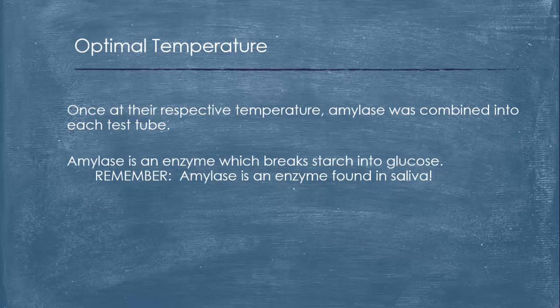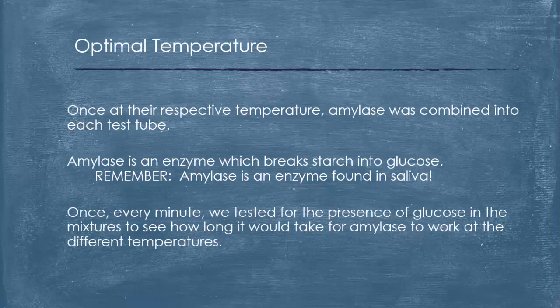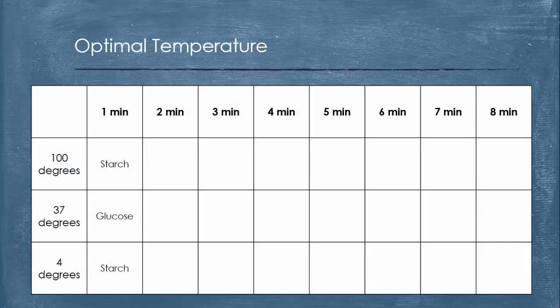After that, once every minute we tested for the presence of glucose in the mixtures to see how long it would take for amylase to work at the different temperatures. We had our little drop plates. At one minute, what we found, or what we should have found, was at 100 degrees it was starch, there was no glucose formed. At 37 degrees it worked almost immediately, glucose was broken down. And at four degrees it yet hadn't broken down, it was still starch. We did this consecutively once a minute.